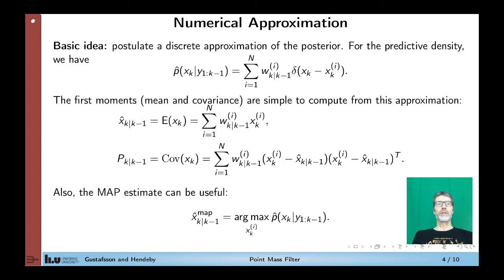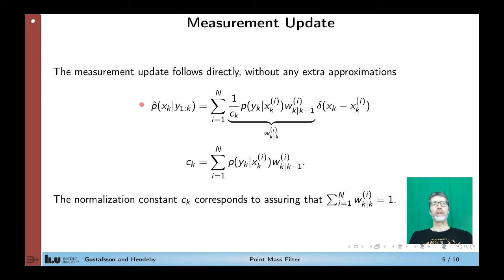So the question is now how to update this predictive and filtering density approximation. Measurement update turns out to be quite straightforward. We assume that we have the weights from the time update given already. We have to multiply by the likelihood function, which is easy to evaluate for a given grid point. When we have done that for all particles, we can compute this normalization factor, guaranteed that the sum is a proper density function so it integrates to 1.